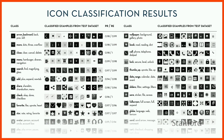The classification results are interesting — the average icons produced for different classes show that people are very consistent in how they design icons, which is why machine learning can learn something here. But there is also variation within each class, leaving room for individual style.